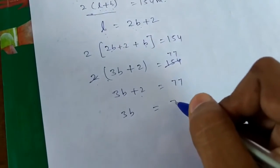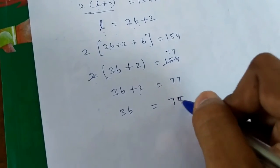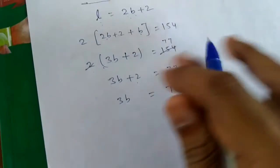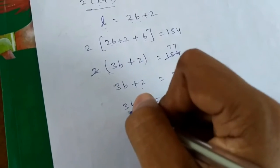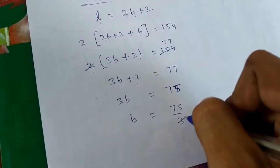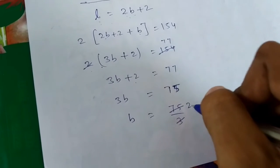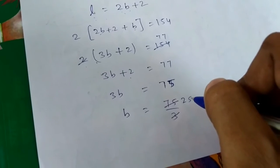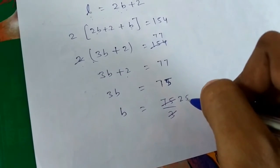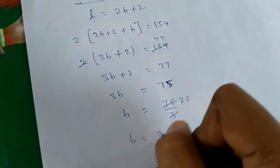77 minus 2 is 75. 3b equals 75, so b equals 75 divided by 3, which is 25. So b is 25 meters.